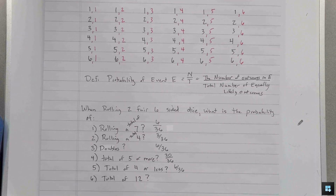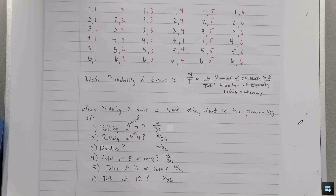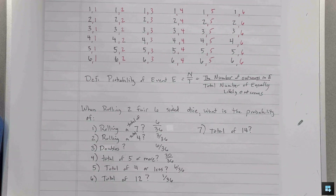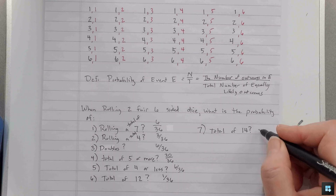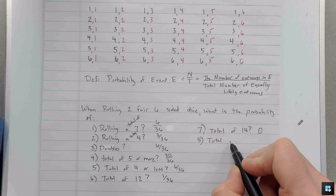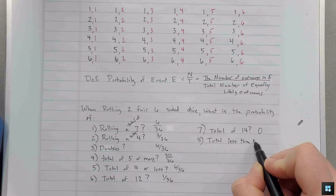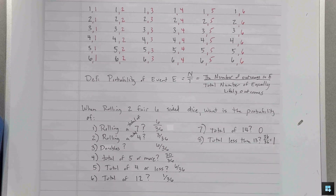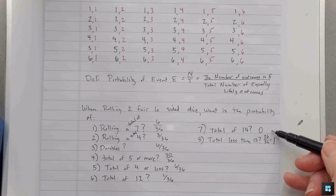How about a total of 14? The probability is zero — it's not going to happen. What about the probability of a total less than 13? That's 36 out of 36, or just 1 — either way is fine. This is certain to happen; you're always going to get less than 13, and you're never going to get a total of 14.